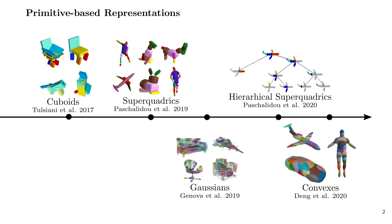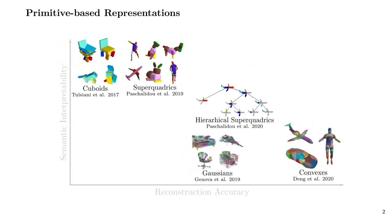In this paper, we identified that there exists a trade-off between the reconstruction quality and the number of parts in primitive-based methods. Due to their simple parametrization, existing primitives have limited expressivity and require a large number of parts for capturing complex geometries. However, using more parts results in less interpretable abstractions, since they do not correspond to identifiable parts.